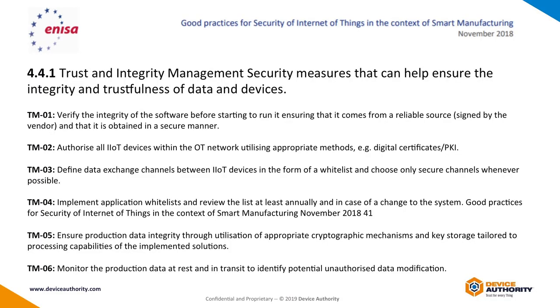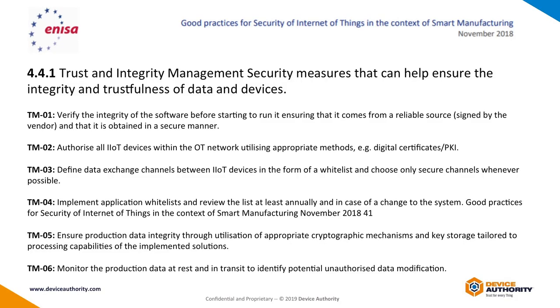I also pulled this from ENISA, which was released last year. This is a good practice guide they've produced for security of the Internet of Things for smart manufacturing. There's a whole raft of guidelines in there — how do you secure updates, how do you manage cloud security, and so forth. I pulled out section 4.4.1, which is all about trust and integrity for management security measures. Looking at number TMO2: authorize all IoT devices within the IoT network using appropriate methods such as digital certificates and PKI. And TMO3: define data exchange channels between IoT devices to form a whitelist, and use only secure channels whenever possible. There are loads of these guidelines, and I'll give an example of why one of our customers decided to deploy digital certificates and PKI.